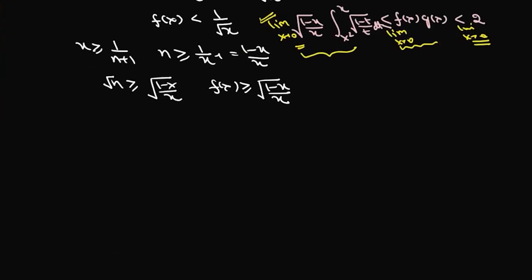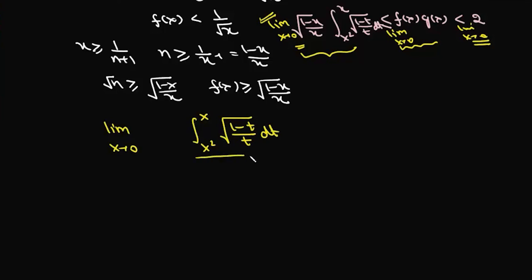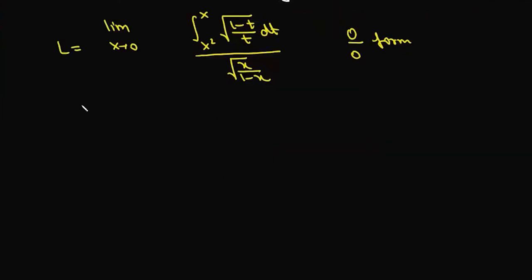We can write this as the limit as x→0 of the integral from x² to x of √((1-t)/t) dt, multiplied by √x / (1-x). Call this limit L. When x→0, the integral goes from 0 to 0, so it is 0/0 form. We can apply L'Hôpital's rule, giving the limit as x→0 of √((1-x)/x) minus...